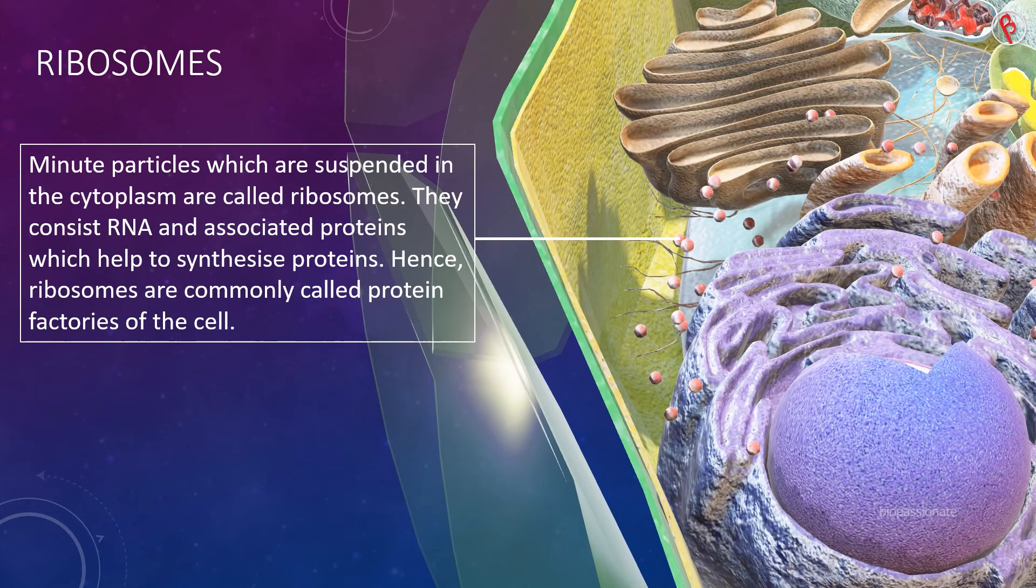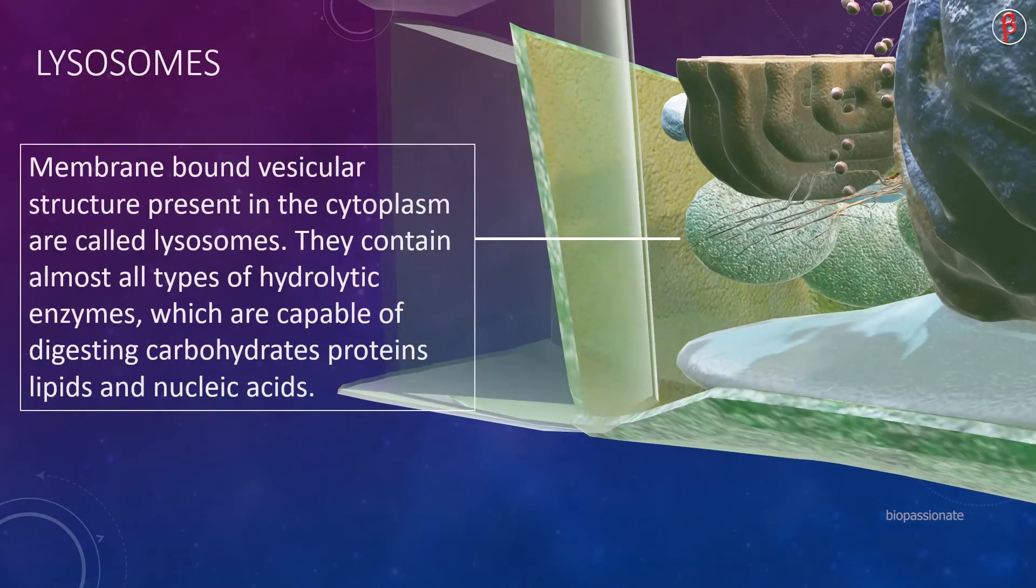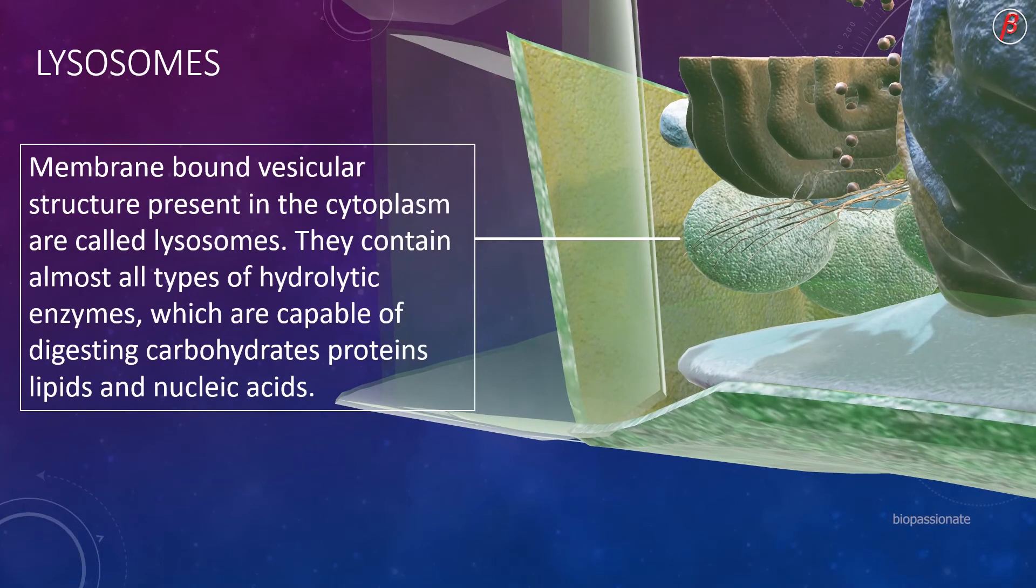Along with ribosomes, membrane-bound vesicular structures present in the cytoplasm are called lysosomes. They contain almost all types of hydrolytic enzymes, which are capable of digesting carbohydrates, proteins, lipids and nucleic acids. Lysosomes are also referred to as suicide bags of the cell.